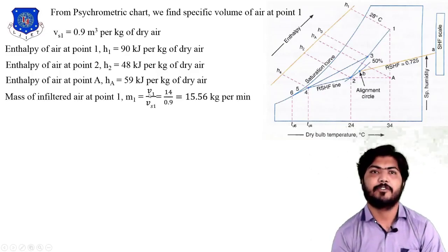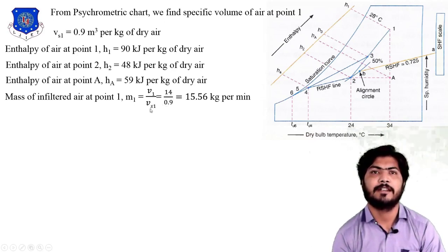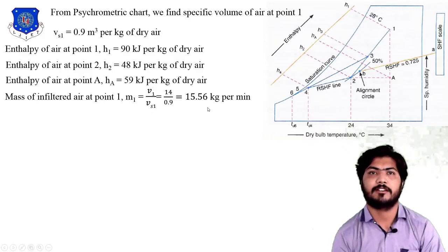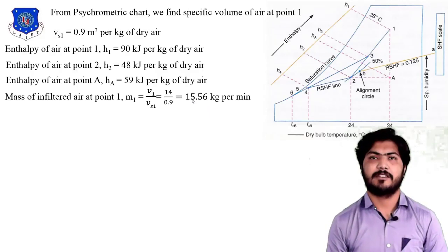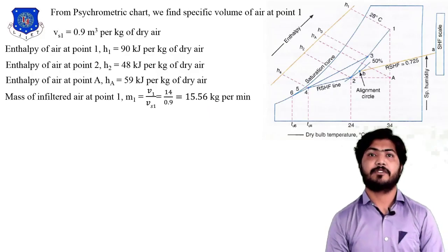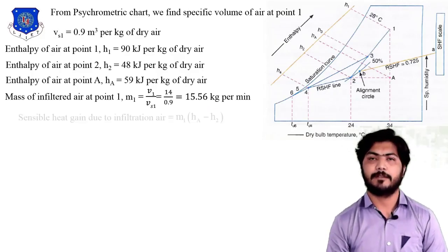Next is the mass of infiltrated air. To calculate the mass of infiltrated air: total volume is 14 cubic meters per minute divided by specific volume of 0.9 cubic meters per kg at point 1, which gives the mass of infiltrated air entering the room as 15.56 kg per minute.